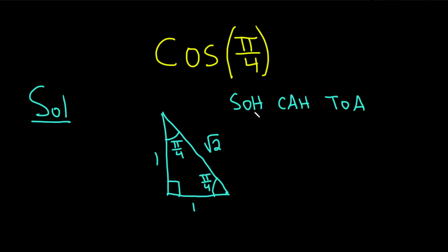So this means that sine is opposite over hypotenuse, cosine is adjacent over hypotenuse, and tangent is opposite over adjacent.